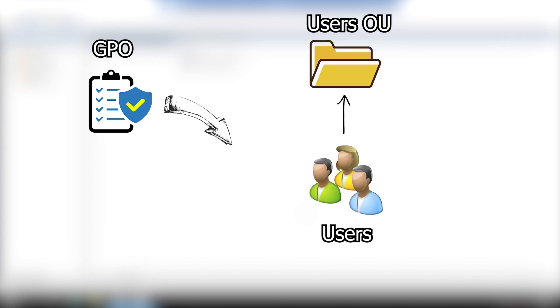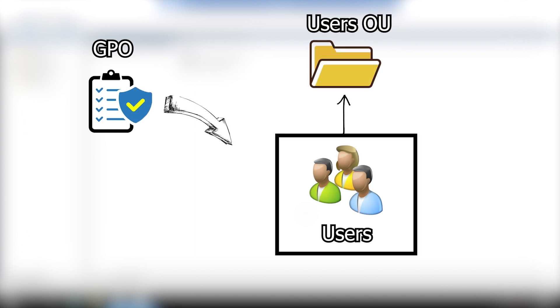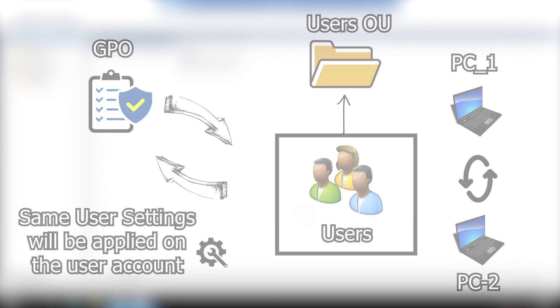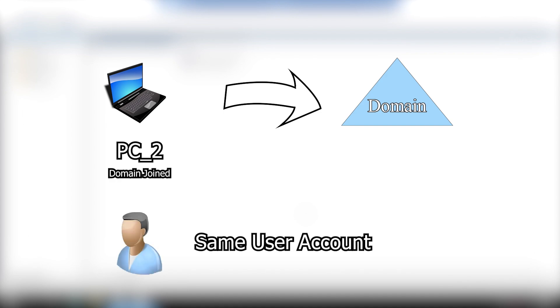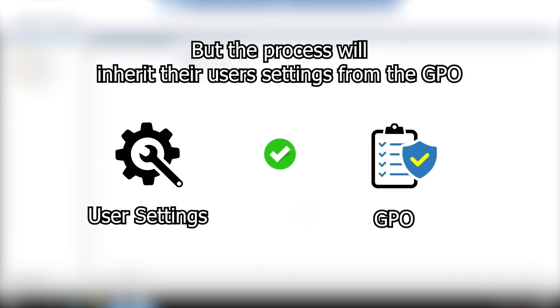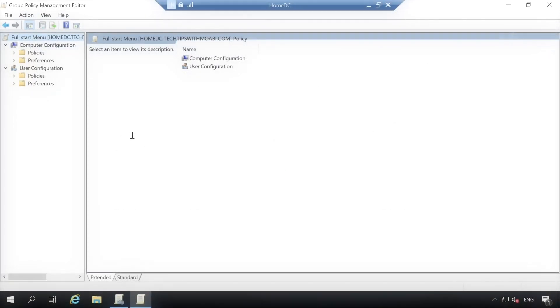The settings for the user configuration will follow the user account even if they change computers. So if we apply a group policy object that affects users within a certain organizational unit, all those users, even if they change computers, will still get the same user configuration, as long as that computer they are changing to is part of the domain and they are still using the same user account. This won't necessarily bring back their files, but all the settings set in user configuration will still apply on the new computer.